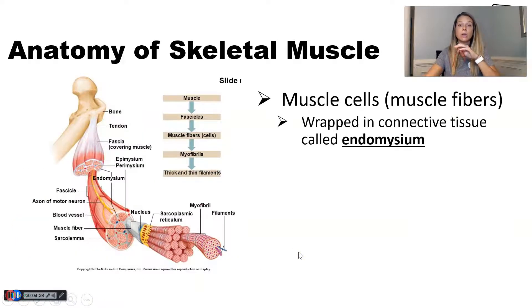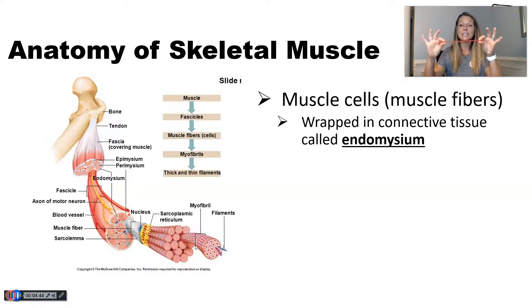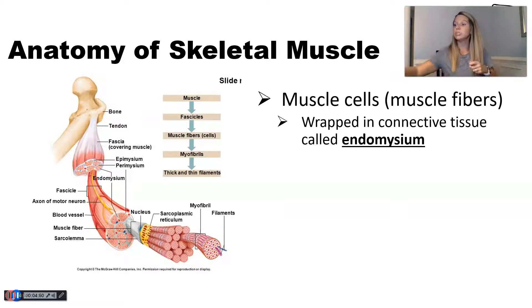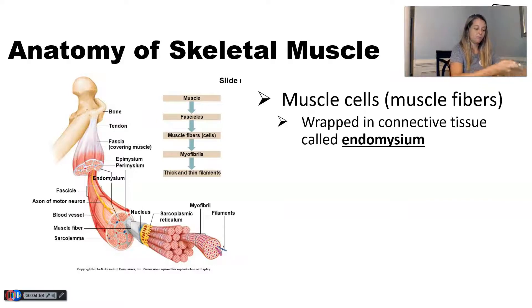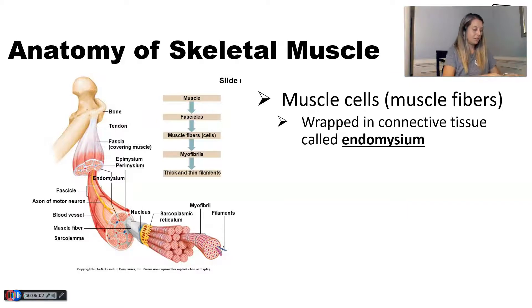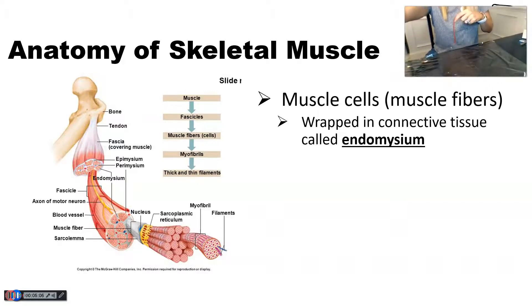Here's the thing about your muscle cells: they are individually wrapped in connective tissue. That connective tissue wrapped around a single muscle cell is called endomysium. I am going to represent endomysium with my Costco-sized box of saran wrap — I'm going to cut some and then wrap my muscle cell.